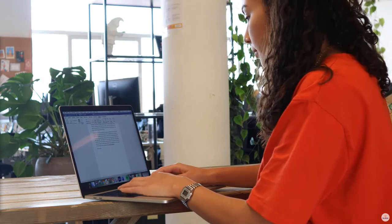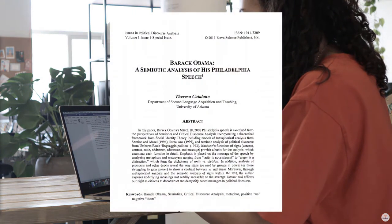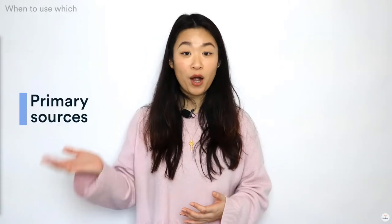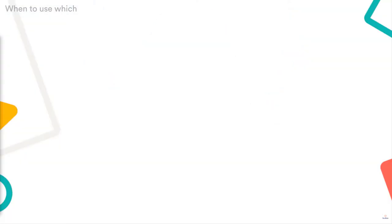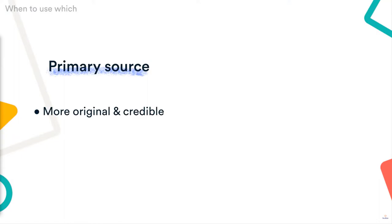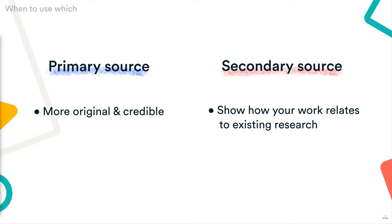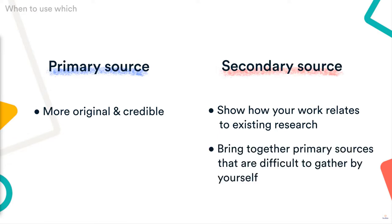For example, in my political communication paper, if I cite an academic article that also analyzed Obama's speeches, then I'm using a secondary source. I can also use secondary sources to gain a better understanding of the topic and how other researchers have approached it. Most papers should use both primary and secondary sources — they complement each other and help you build a convincing argument. Secondary sources often bring together a large number of primary sources that would be difficult and time-consuming to gather yourself, so they're important to help you gain a full understanding of your topic.